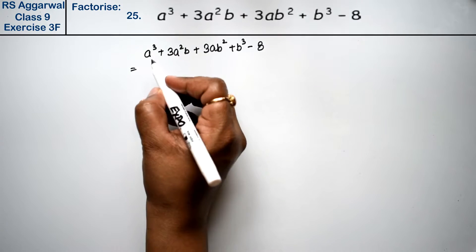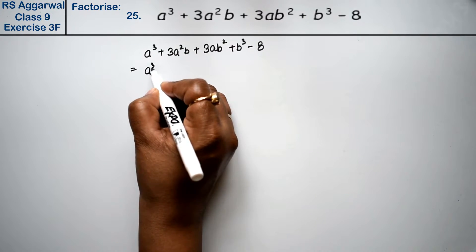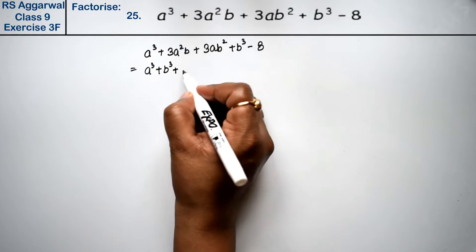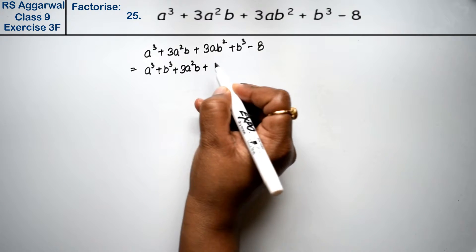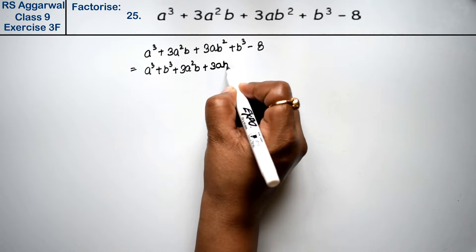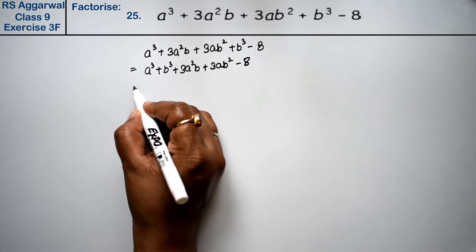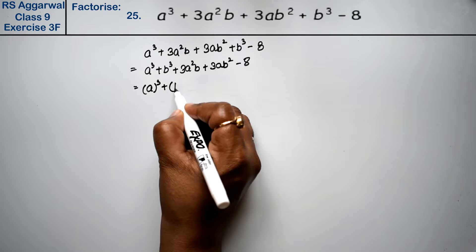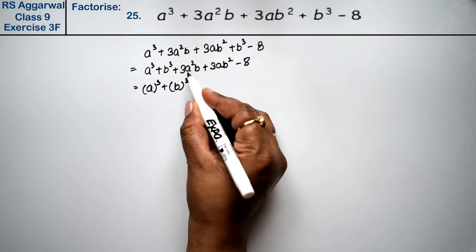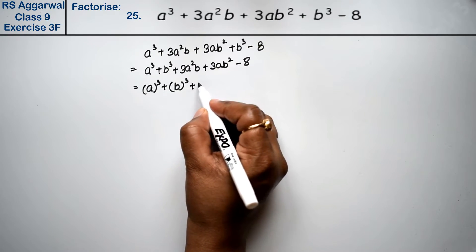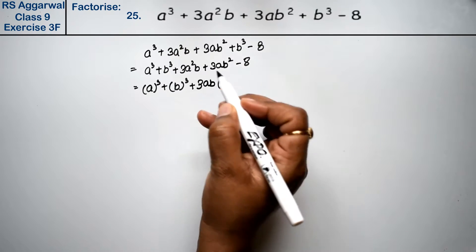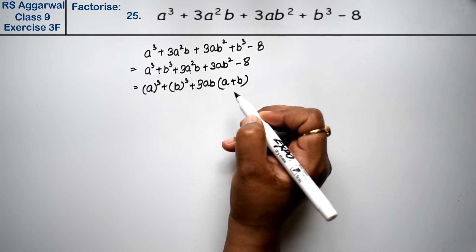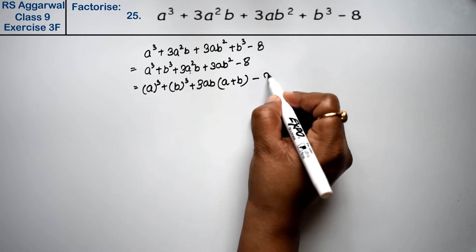I'll rearrange the terms: a cube plus b cube plus 3a square b plus 3ab square minus 8. I've only changed the order. Now look, we can write this as a whole cube, b whole cube, plus from these two terms 3ab is common, so what remains is a plus b, minus 8.